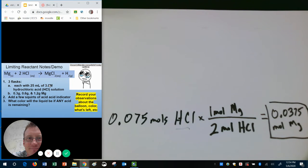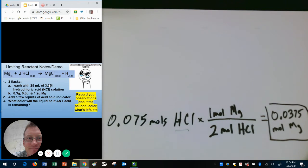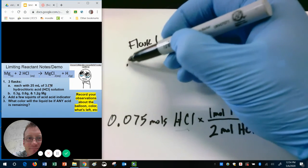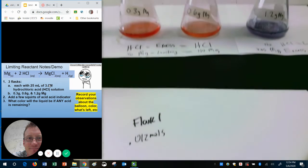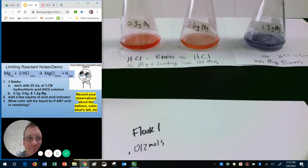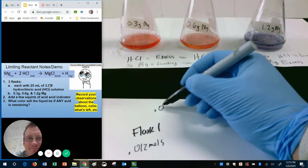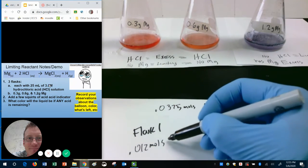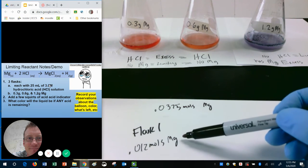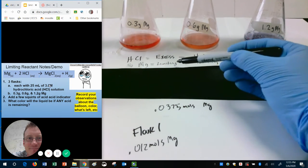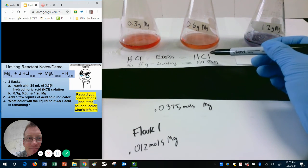Let's go back to our flasks. How many moles of magnesium do they have? In flask one, we have 0.012 moles. Why was there still excess HCl? Because we have enough acid to react with 0.0375 moles of magnesium, but we only had 0.012 moles of magnesium. We had more acid than we needed. Or another way to look at that, we have not enough magnesium to react with all of our acid. So the magnesium limits how much this reaction can happen. Acid in excess.